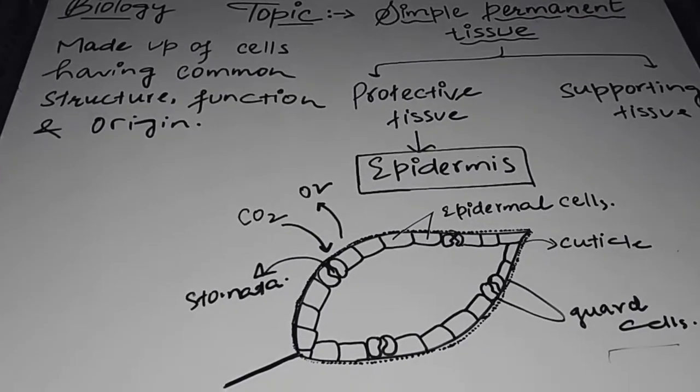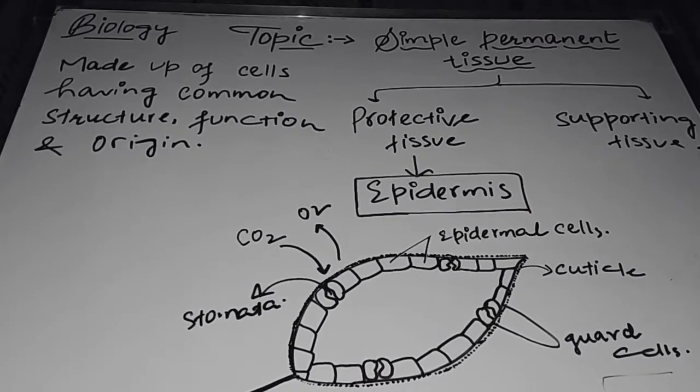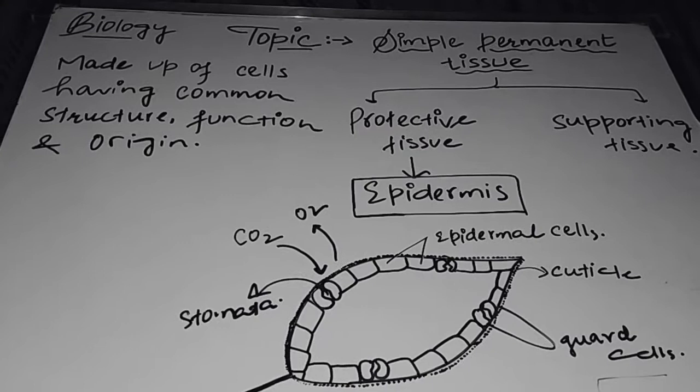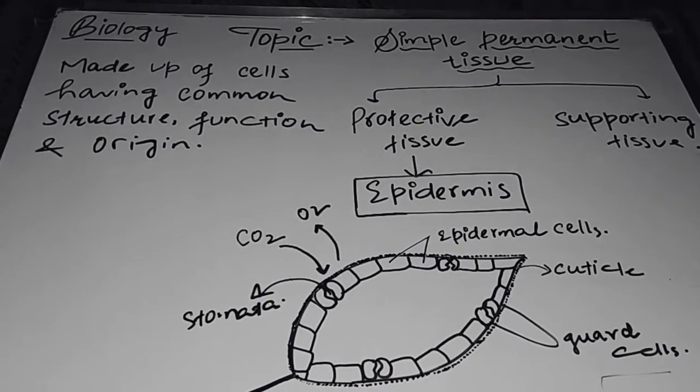Assalamu alaikum to all of you, my dear students of 7th standard. In this lecture we will discuss one of the types of permanent tissue, that's simple permanent tissue. In the earlier lecture I told you that plant body is made up of different types of tissues.